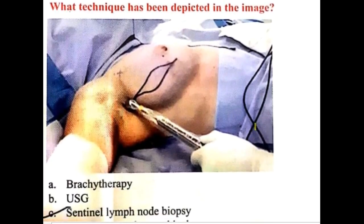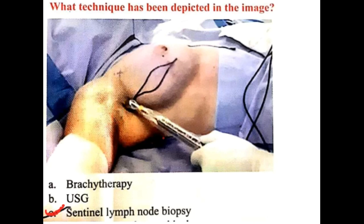What is the technique depicted in the image involving breast cancer and the axilla? This is sentinel lymph node biopsy. Methylene blue dye is injected into the areola or near the areola, and the dye travels to the first axillary lymph node. Using a fluorescent probe, if involvement of the axillary lymph node is found, axillary lymph node dissection is performed. Sentinel lymph node biopsy guides the decision for axillary dissection.